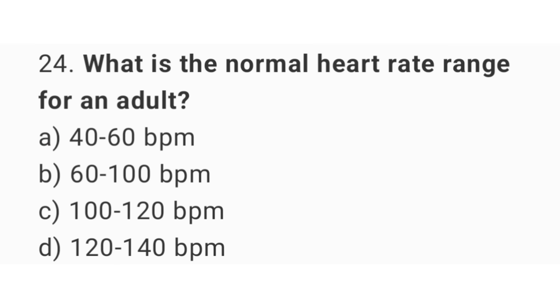Question 24. What is the normal heart rate range for an adult? The right answer is option B: 60 to 100 BPM.